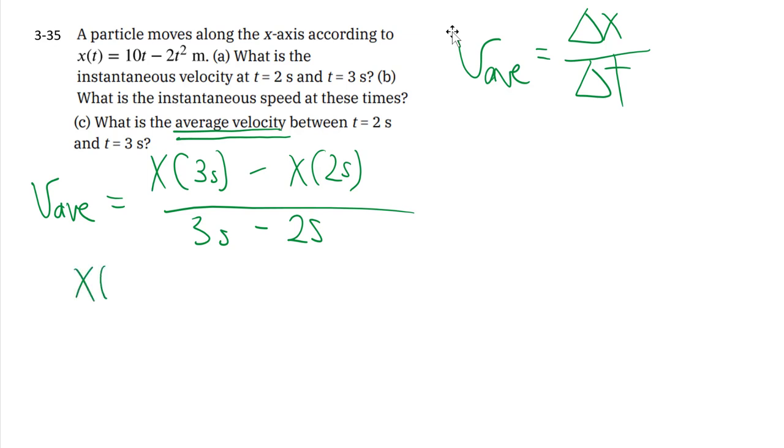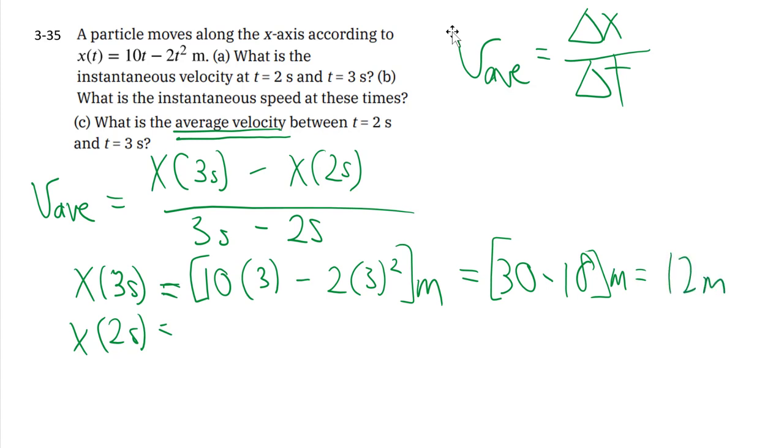It gets a little lengthy, so I'm going to first figure out what the position at three seconds and at two seconds is first. So that's that knowing all the units work out to meters, 30 minus 18 equals 12 meters. Likewise, with the two second case, it also gives us 12 meters.